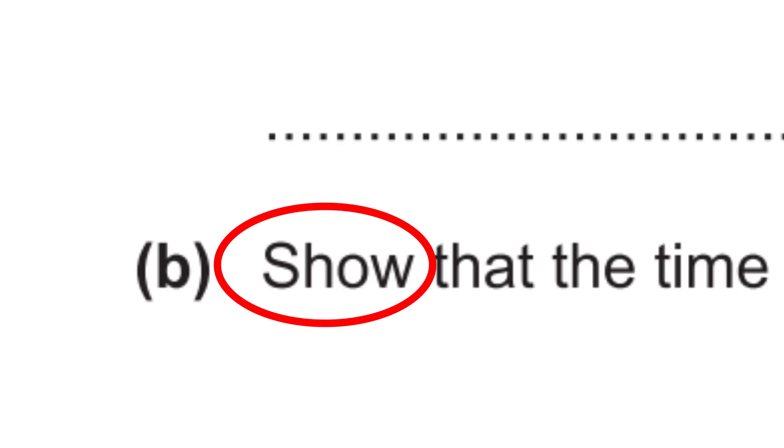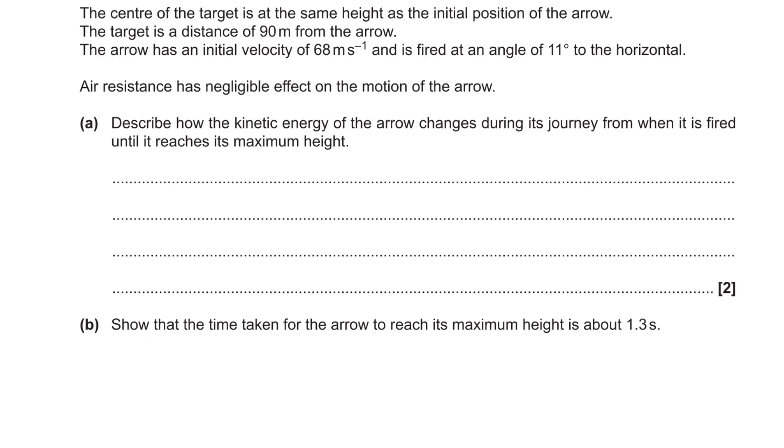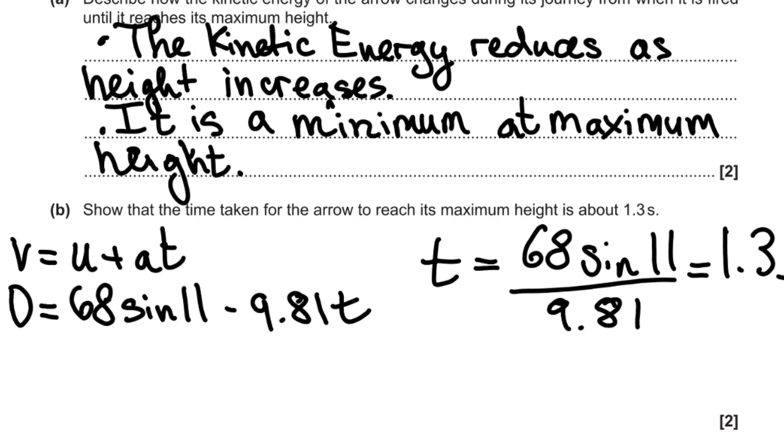For part b we need to show that the time taken to reach maximum height is 1.3 seconds. In this example all of the available marks will be dependent on our working out.